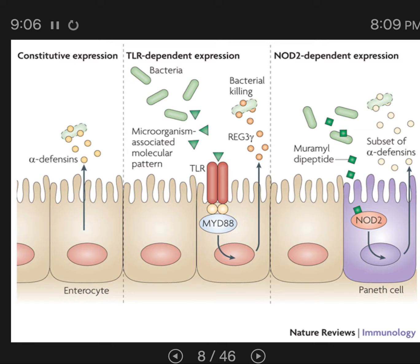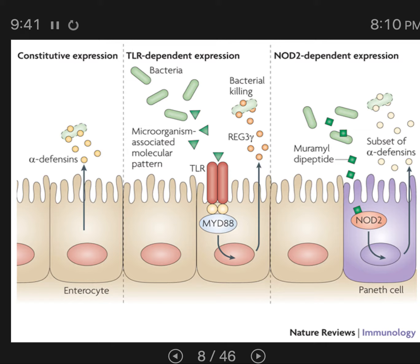Another type of communication with the immune system involves the cells lining the intestine receiving what I'm now going to call MAMPs — microbial-associated molecular patterns. We talked about PAMPs before, when we covered the adaptive and innate immune responses: toll-like receptors receive PAMPs, or pathogen-associated molecular patterns. PAMPs are molecules found on pathogens that are common to many pathogens, like peptidoglycan — all bacteria have peptidoglycan — or lipopolysaccharides, found on all gram-negative bacteria, or flagellin, found on all bacteria with flagella.